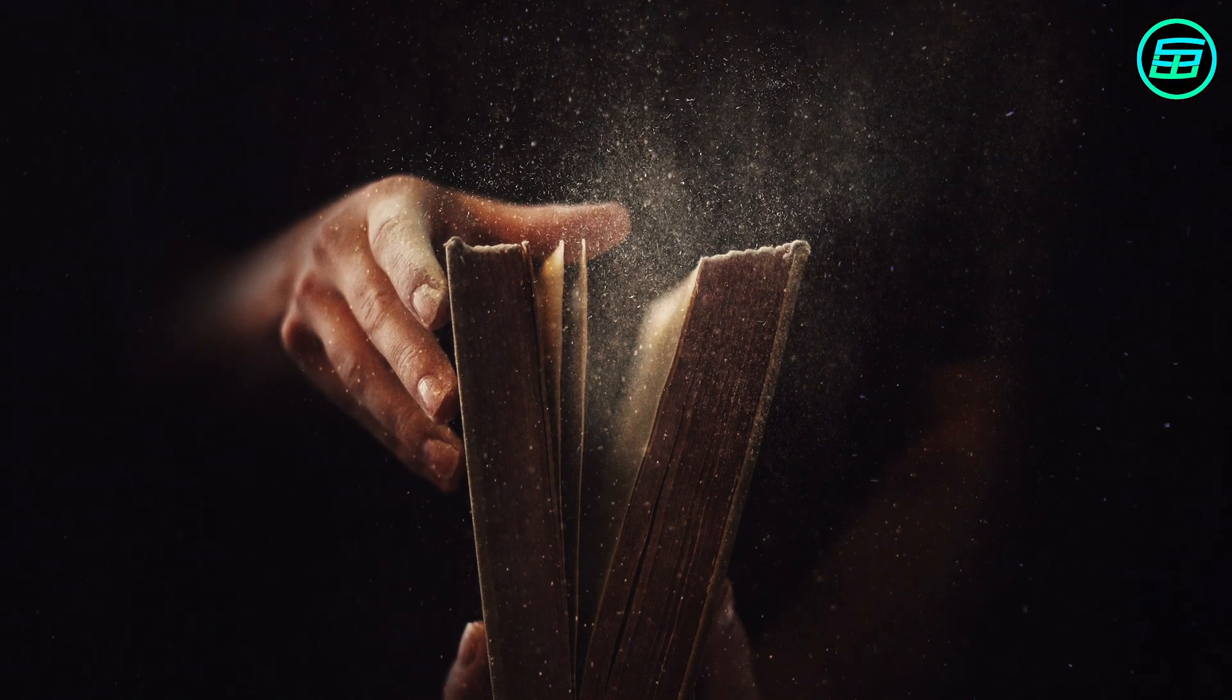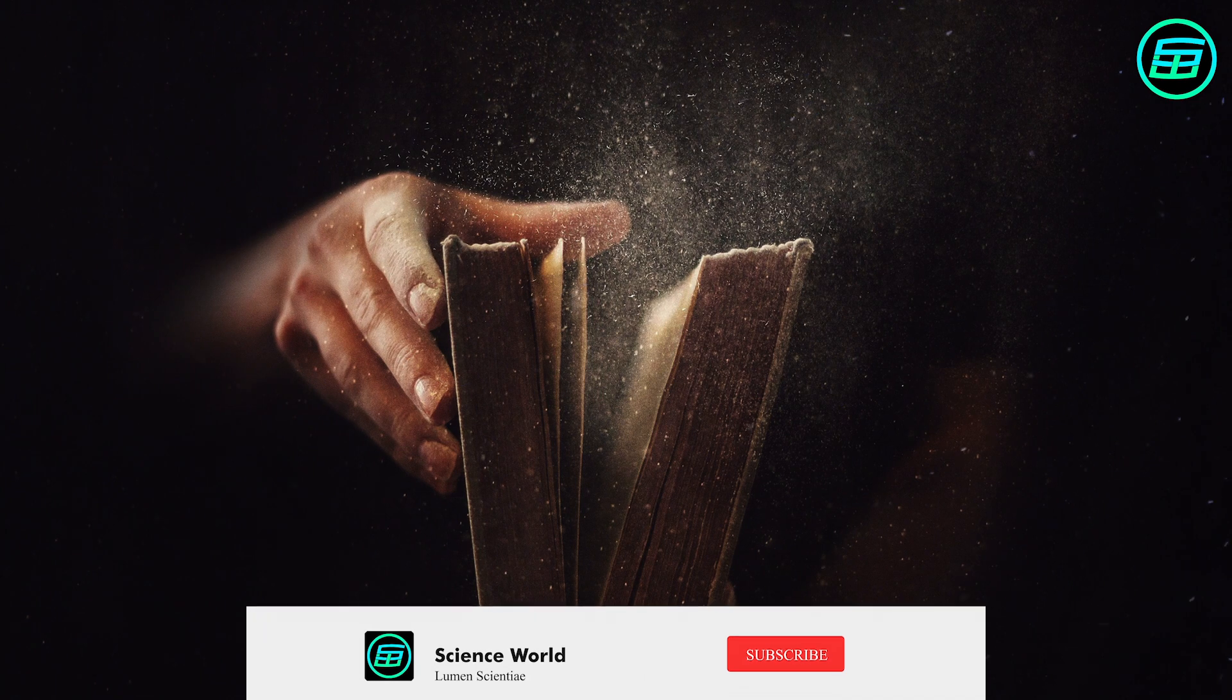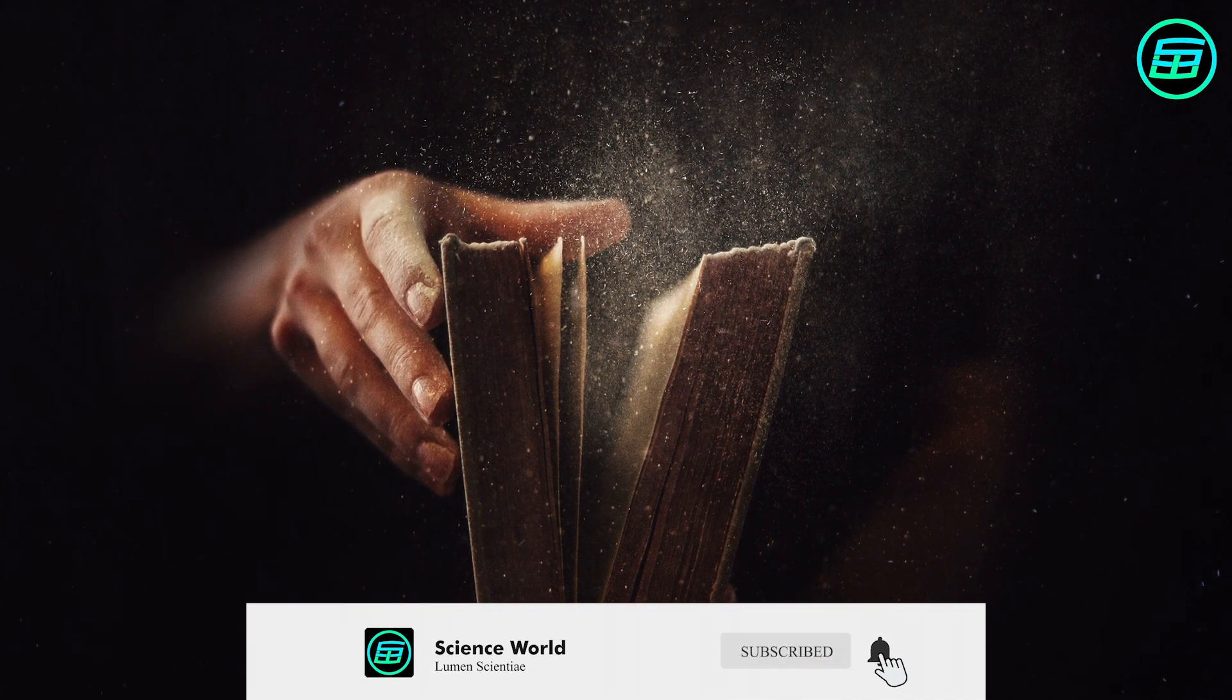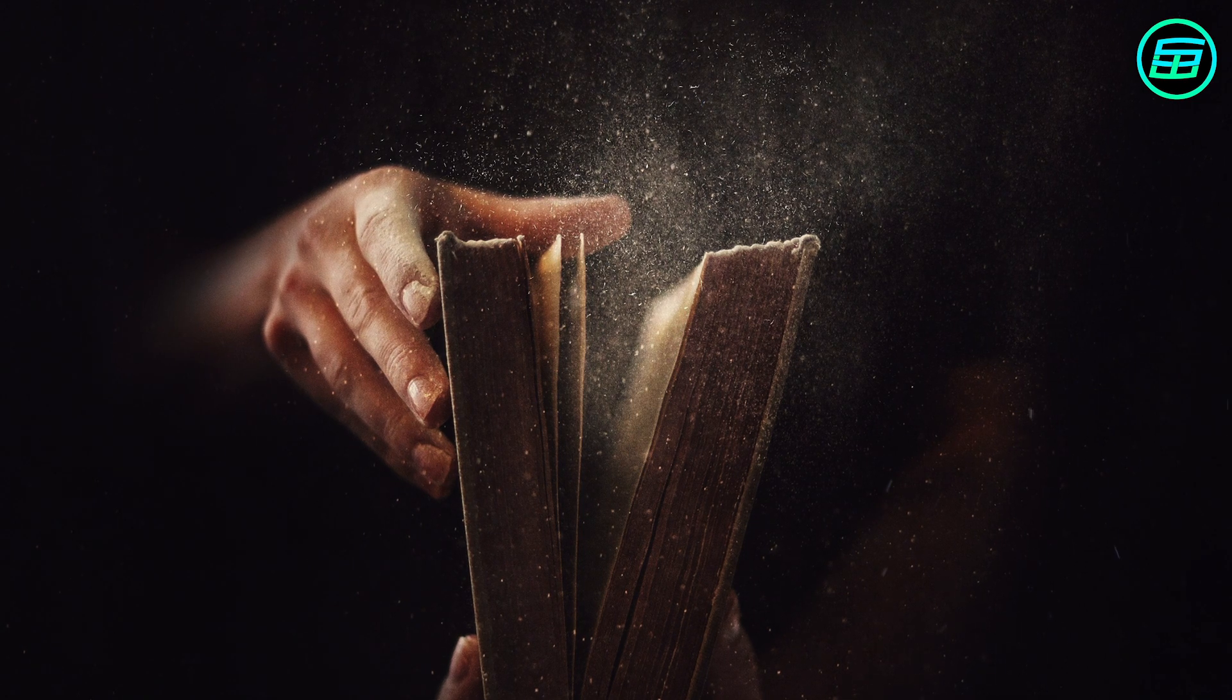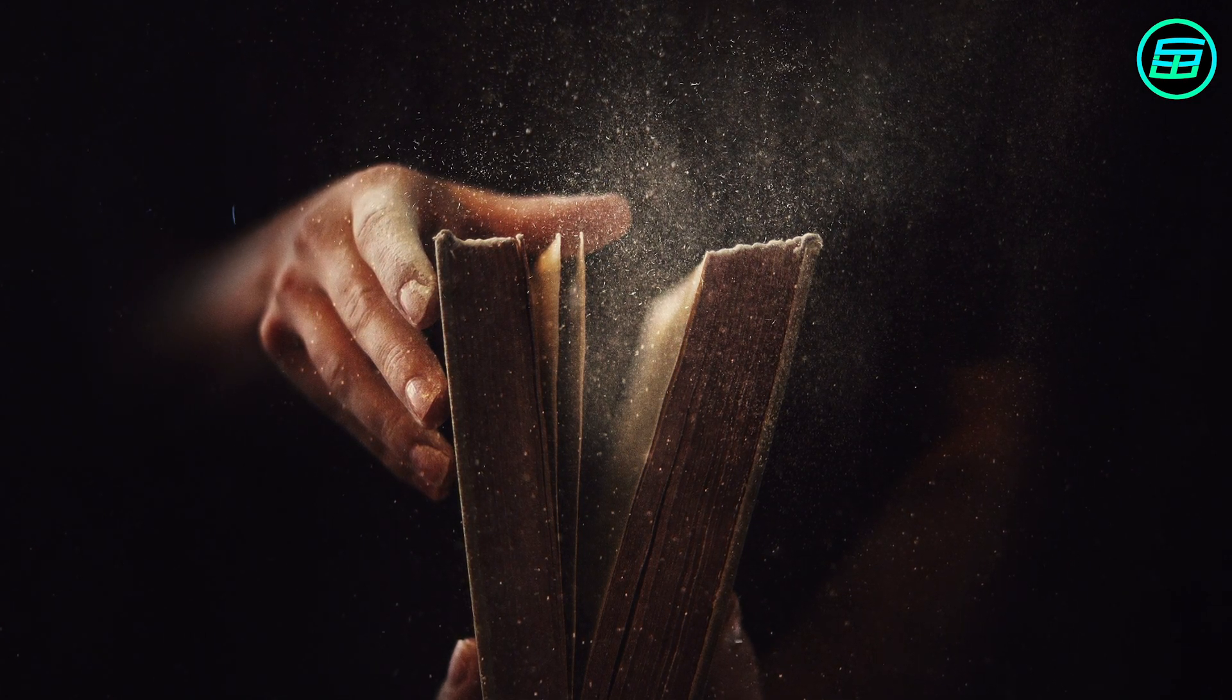It's not known when and by whom perfect numbers were discovered, but we do know that some famous mathematicians including Euclid, Alhazen, Cataldi, Mersenne, and Euler worked on them.